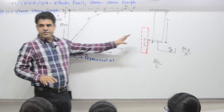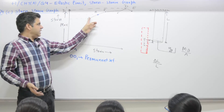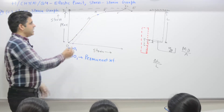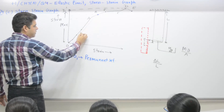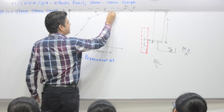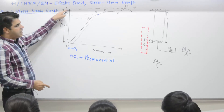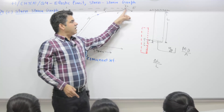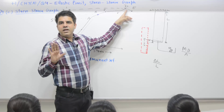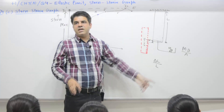Procedure: you take a wire. O to A it is directly proportional. A to B it deviates from straight line. At B, if you decrease weight, it won't follow the black curve — it will follow the blue line. Keep on adding stress: small increase in stress, strain increases. Maximum stress applied in the experiment is O D-dash. After this, even if you remove weight, the wire keeps on increasing in length and the material breaks at point E.